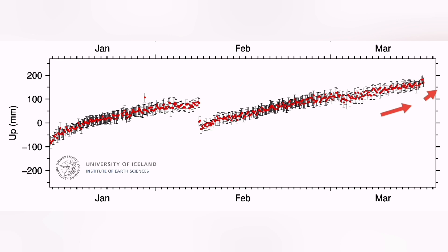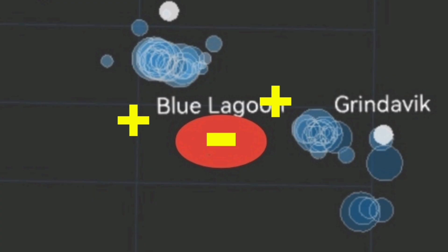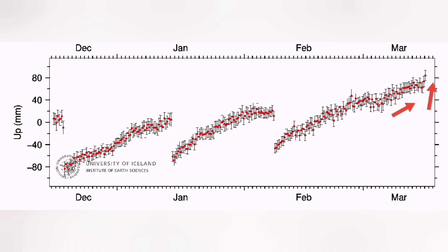Toward the east is Thorbjorn, and you can see that we have a slight uplift. Magma is flowing toward there.